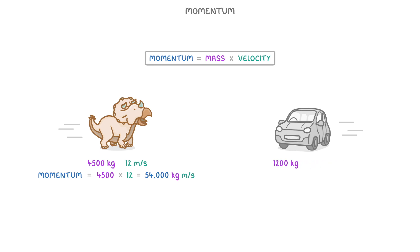Whereas if we had a 1,200 kg car travelling at 25 m per second, then its momentum would be 1,200 times 25, so 30,000 kg m per second.